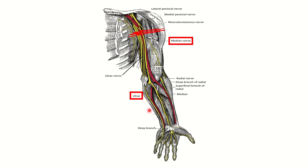The main median branch supplies almost all the flexors of the forearm, except two and a half muscles which are supplied by the ulnar nerve. It then passes through the carpal tunnel into the hand, receiving sensory innervation from three and a half fingers on the palmar surface, and from the nail beds on the dorsal surface. The thenar muscles supplying the thumb are also supplied by the median nerve.